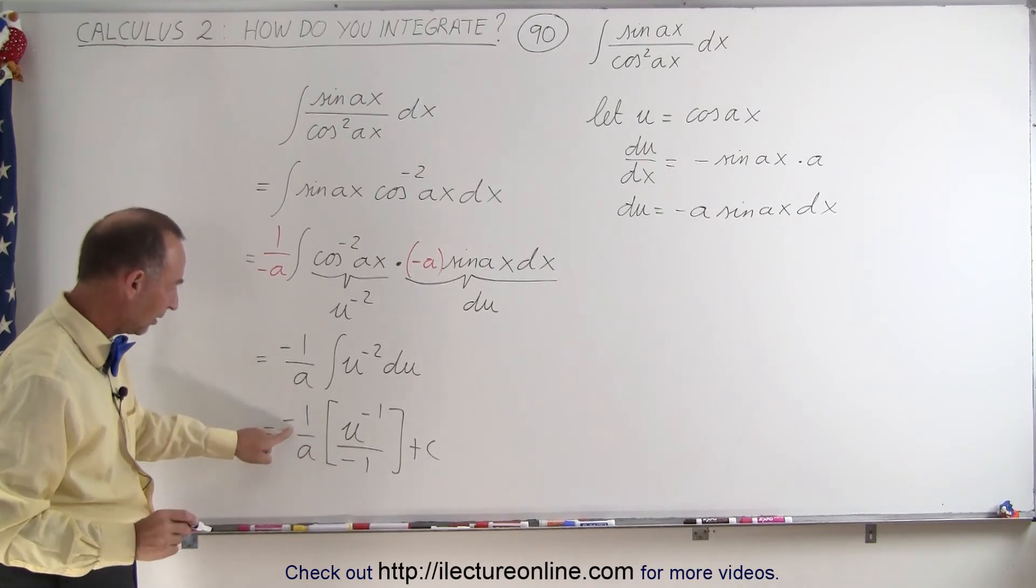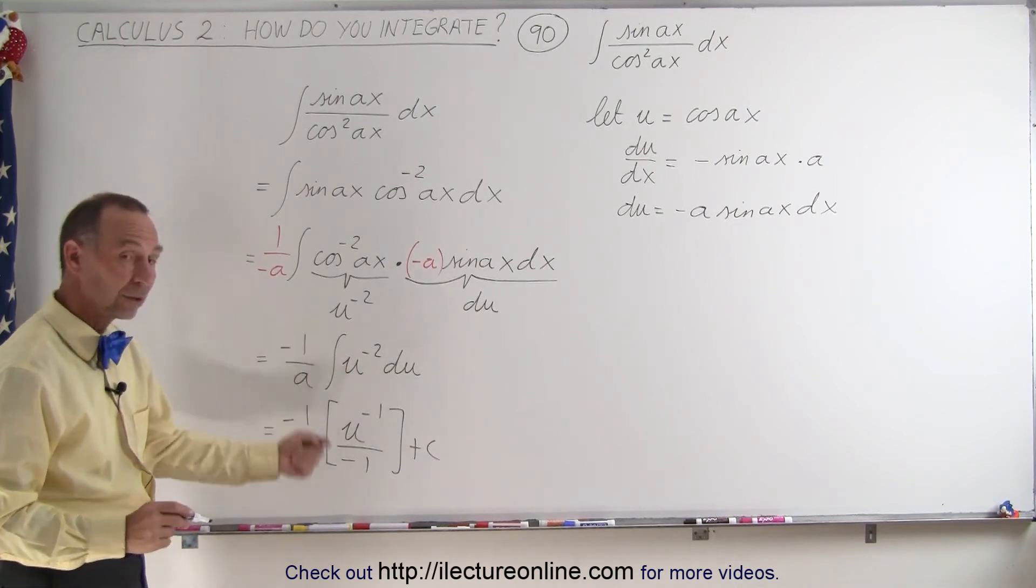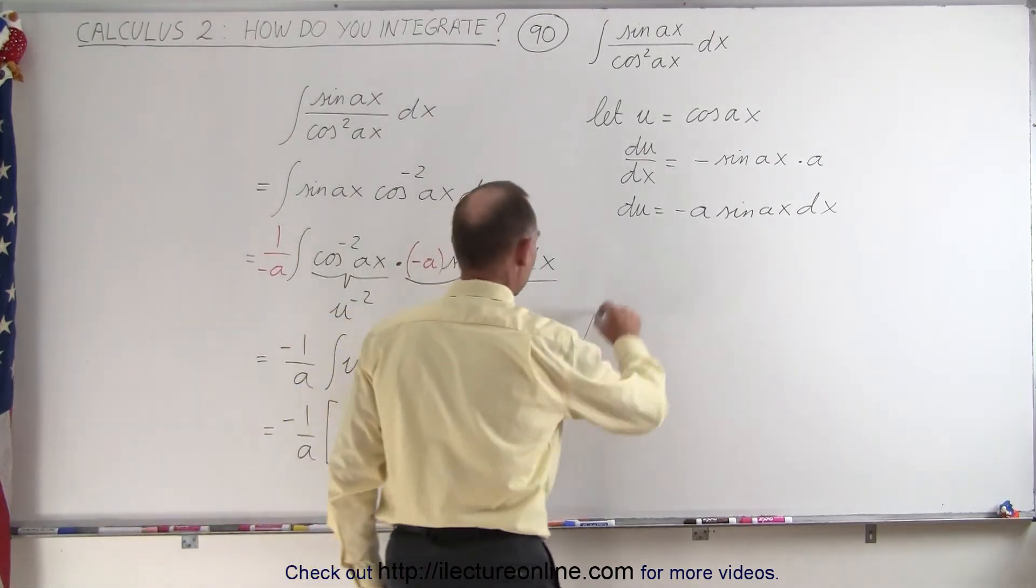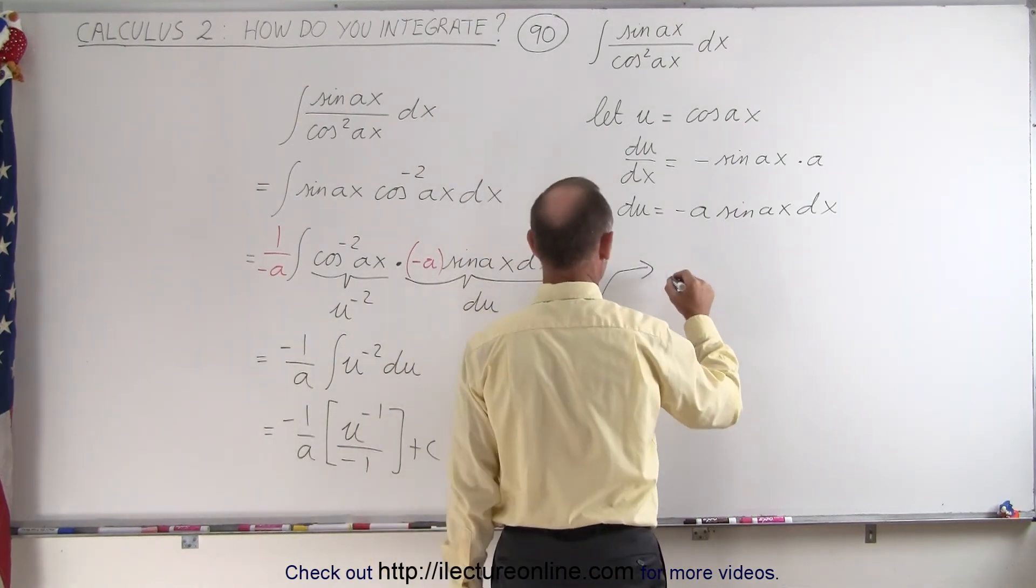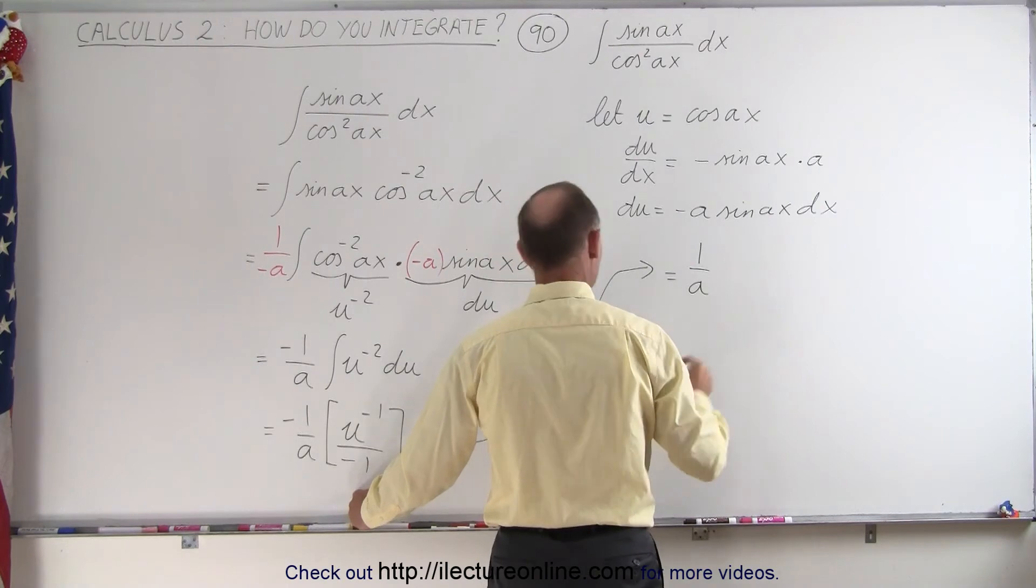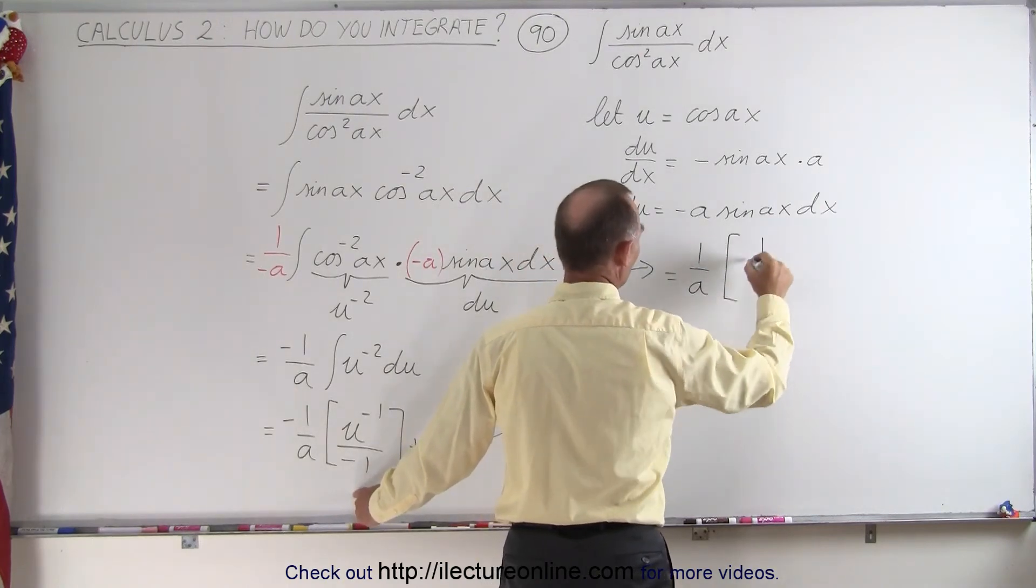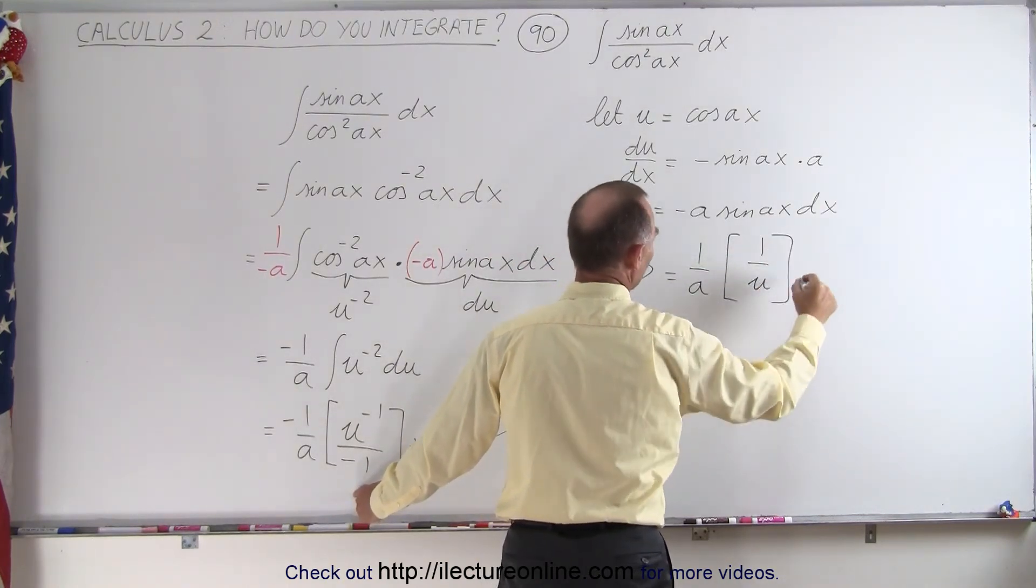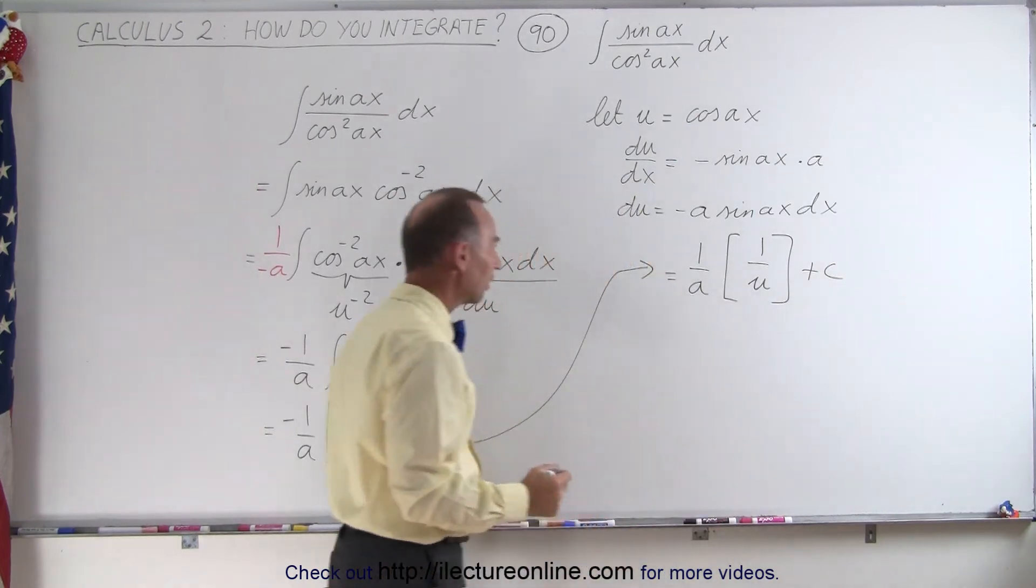Now this negative will cancel out this negative, and u to the minus one can go to the bottom. So coming up here, we can say that this now becomes equal to one over a, the two negatives cancel out, and we're going to write this as one over u to the first power, plus a constant of integration.